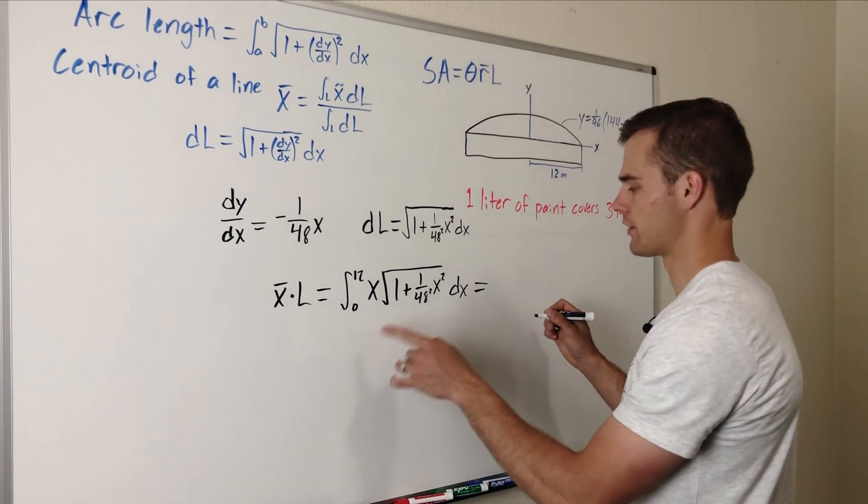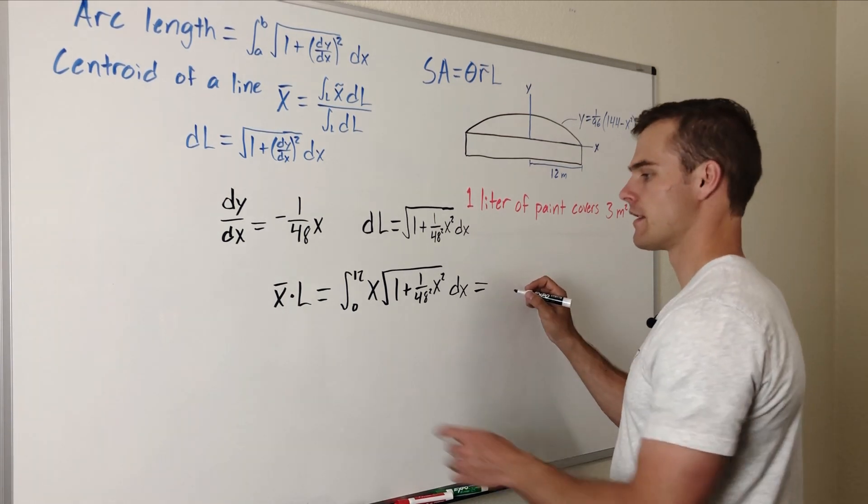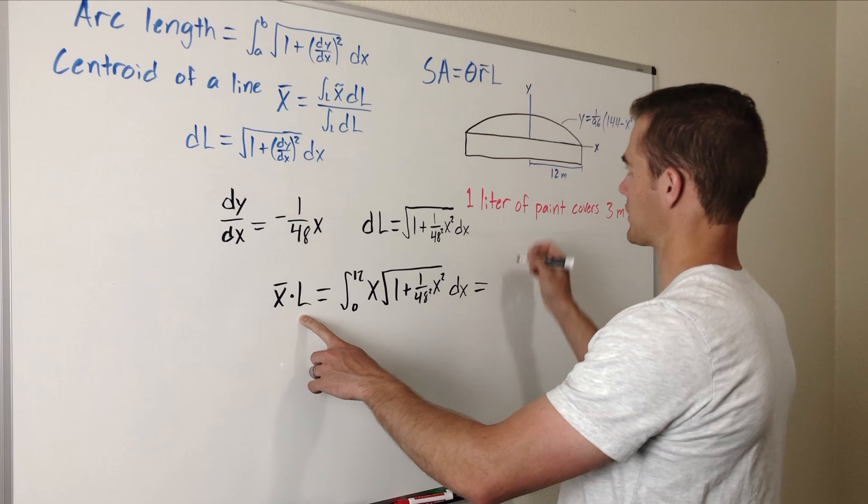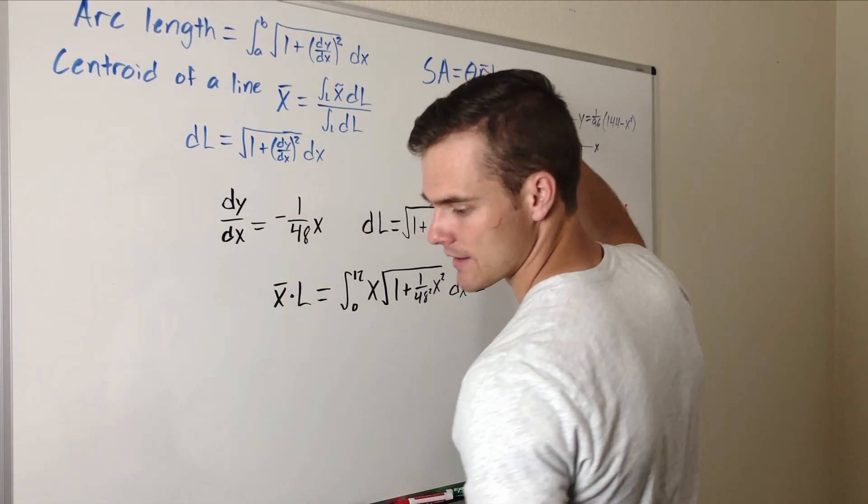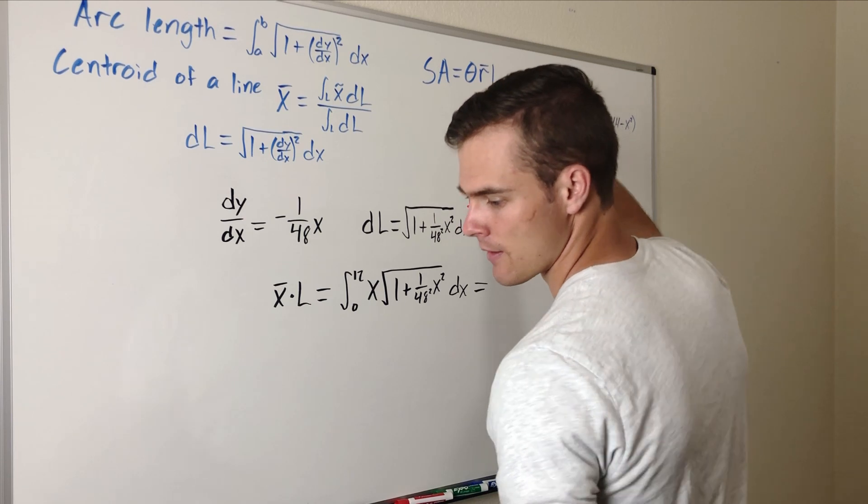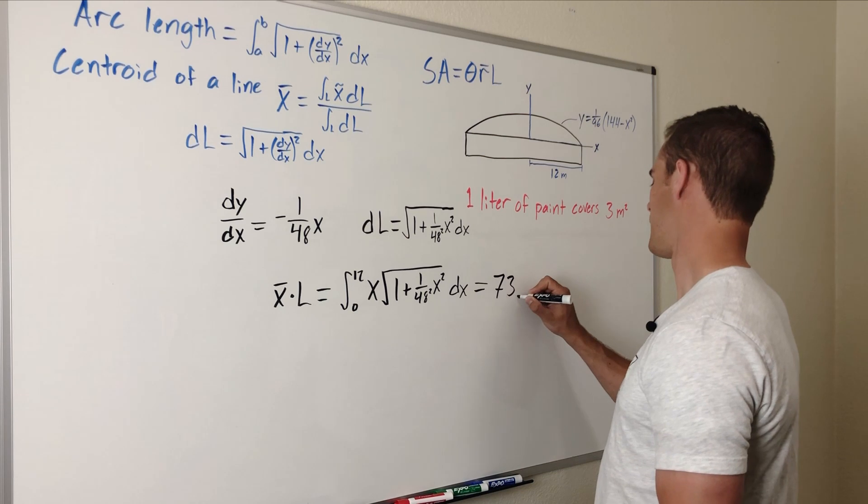If you plug this into your calculator or something or do it by hand you should end up getting x bar times L which is the same as r bar times L is 73.114.